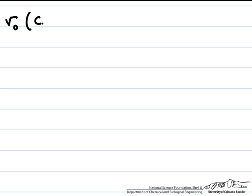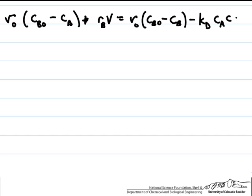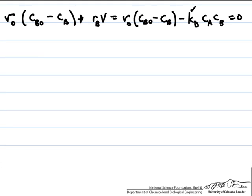A mole balance on B looks like this: the volumetric flow rate times the concentration of B at the inlet minus the concentration of B at the outlet, plus the rate of reaction of B on a volumetric basis times the reactor volume, equals zero. The reaction is elementary, so the rate is first order in both A and B, giving KD times CA times CB. Plugging in the volumetric flow rate, CB inlet = 0.5, CB outlet = 0.3, and CA = 0.1, we solve for KD and find it equals 0.67 liters per mole minute.